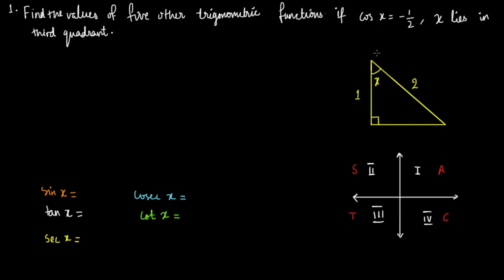So cosine x equals minus half. Just forget about the sign now, we'll see in a minute why the sign matters. But just for the purpose of understanding, we have a triangle whose adjacent side, so that is angle x, and its adjacent side is one and the hypotenuse is two by the definition of cosine x.